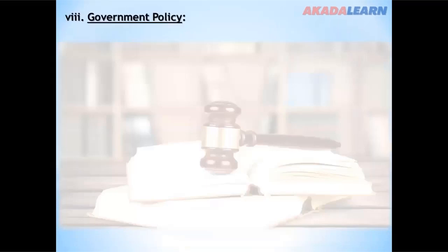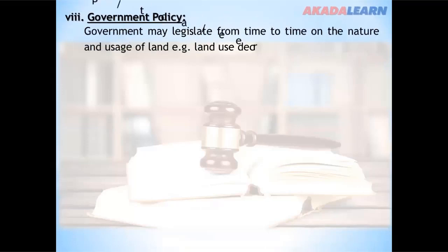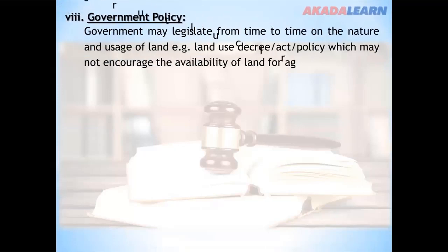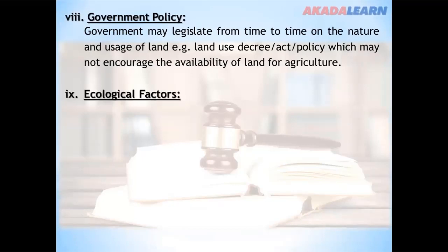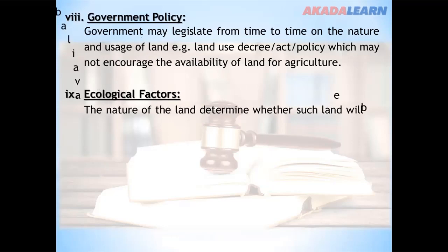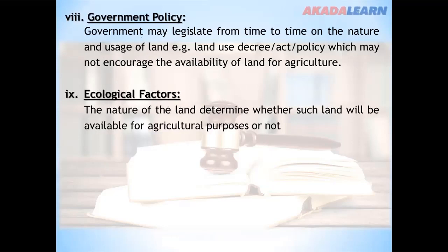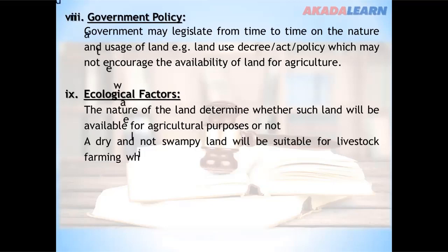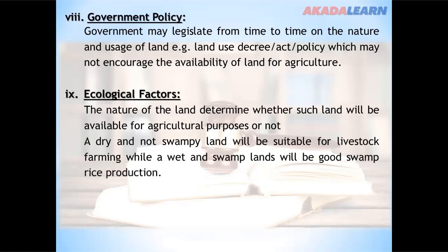Government policy on land. The government may legislate from time to time on the nature and uses of land. For example, the land use decree or act policy which may not encourage the availability of land for agriculture. We also have ecological factors. The nature of the land determines whether such land will be available for agricultural purposes or not. A dry, non-swampy land would be suitable for livestock farming, while a wet and swampy land would be good for swamp rice production.